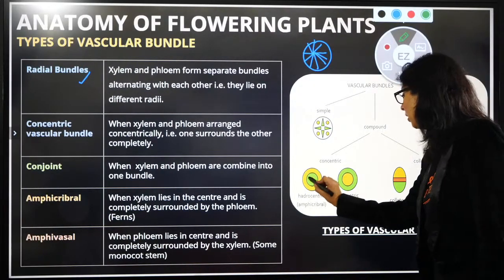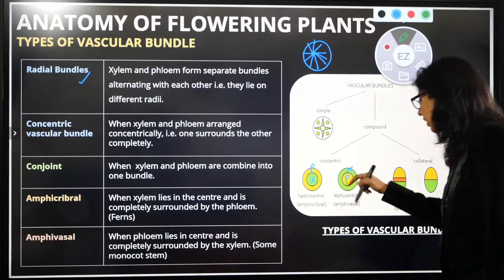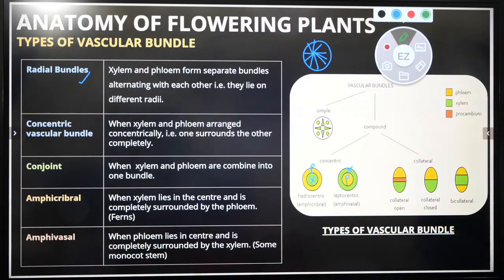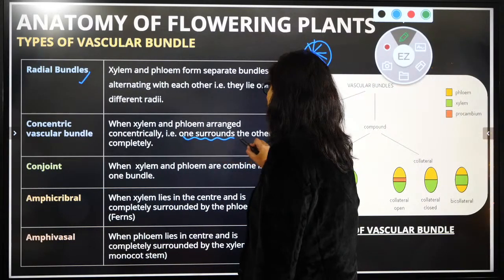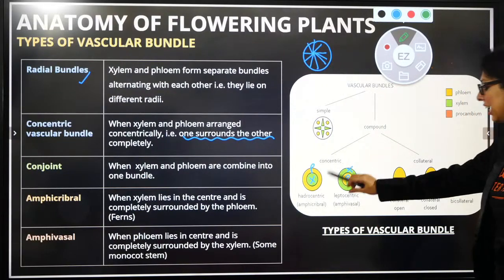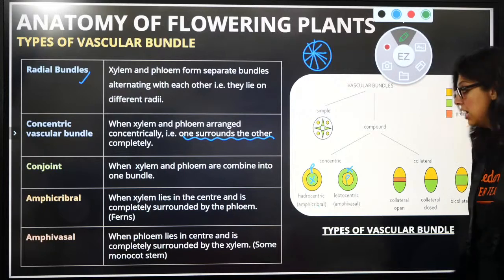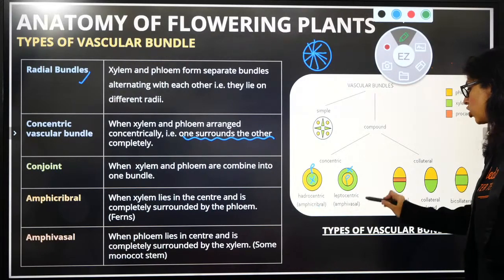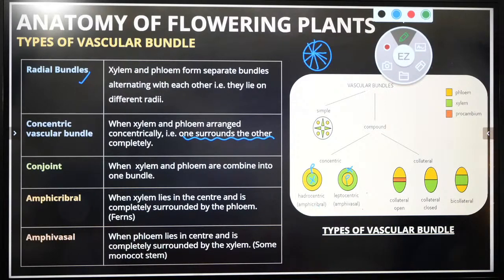If xylem is in the center and surrounded by phloem, it is called hydrocentric, also called amphicribral. If phloem is in the center and surrounded by xylem, it is called leptocentric, also referred to as amphivasal. When both xylem and phloem are joined, it is called conjoined. When xylem lies in the center completely surrounded by phloem, it is called amphicribral — this happens in pteridophytes or ferns.